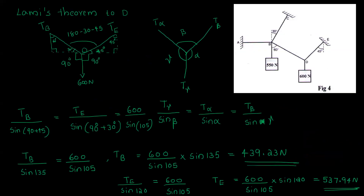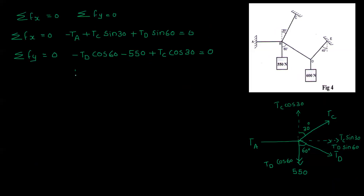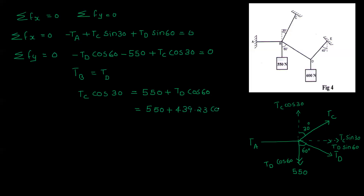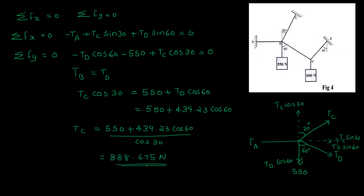TB and TD are equal. We will now find TC. TC cos 30 equals 550 plus TD cos 60, which is 550 plus 439.23 cos 60. Therefore TC equals 550 plus 439.23 cos 60 divided by cos 30. That is equal to 88.675 N.